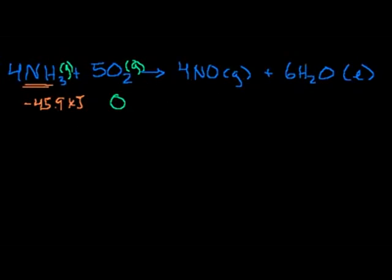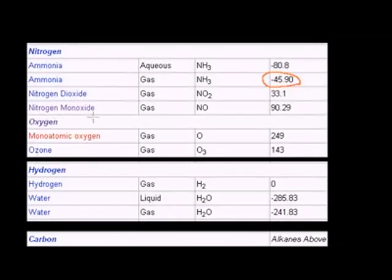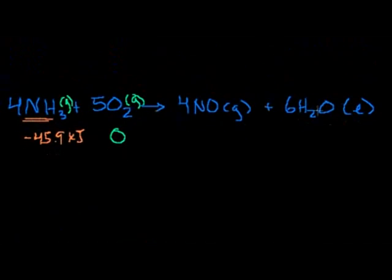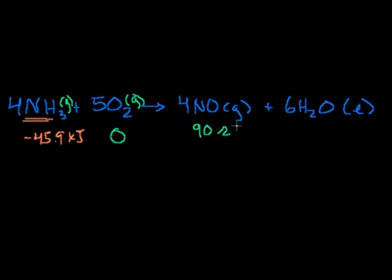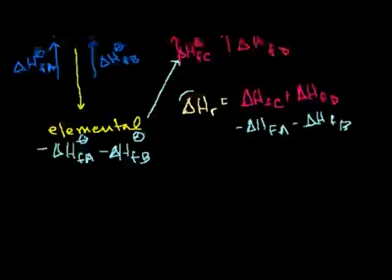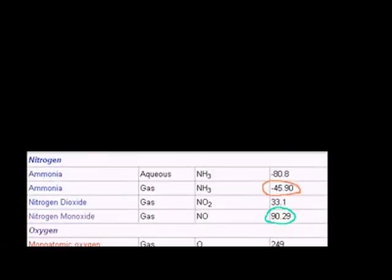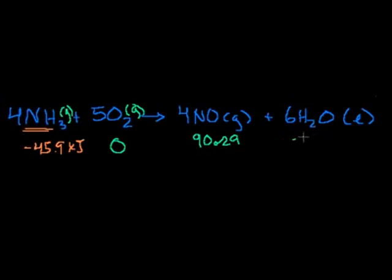Now, what about nitrogen monoxide? Nitrogen monoxide has a heat of formation of positive 90.29 kilojoules per mole. And the heat of formation of liquid water is minus 285.83 kilojoules per mole.